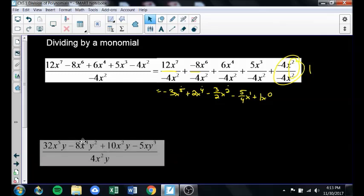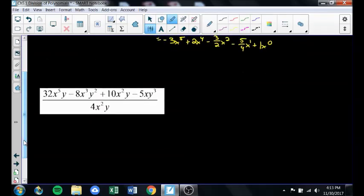So just another quick example. This one has multiple variables on the bottom, but that's okay. I'm just going to divide and cancel. So 32 divided by 4 is 8. And the powers on the x is dropped by 2. And the powers on the y's dropped by 1, so the y's are gone entirely. Then I'm going to divide these two by each other. Negative 8 divided by 4 is negative 2. There's one x and one y left over.